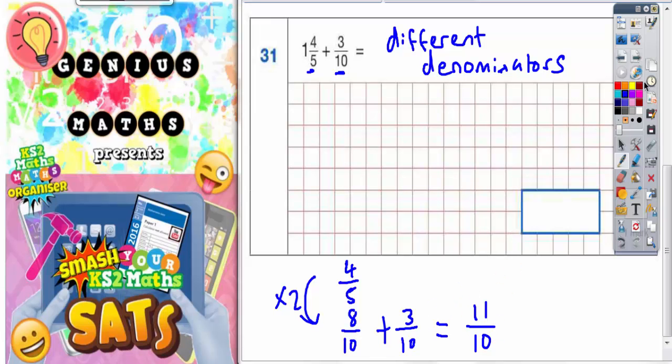But 11/10 is an improper fraction. To turn an improper fraction into a mixed number, you do a divide. So this line here means divide. What you're actually doing is 11 divided by 10. Now 11 divided by 10 is 1 remainder 1. This one here is your remainder.